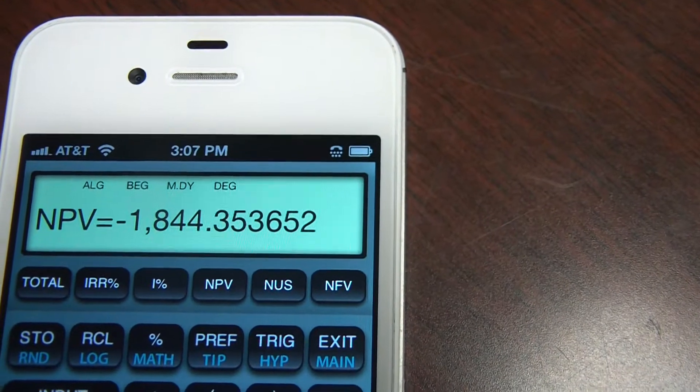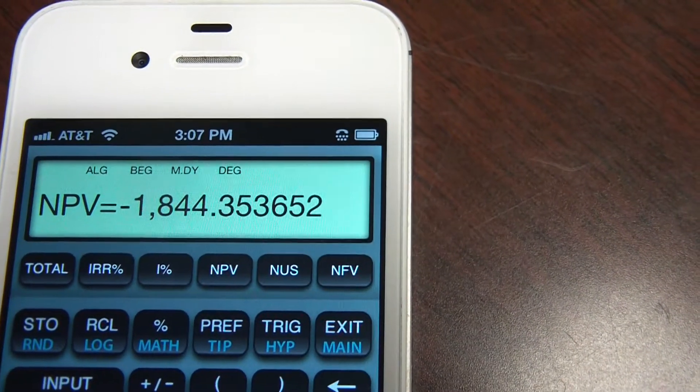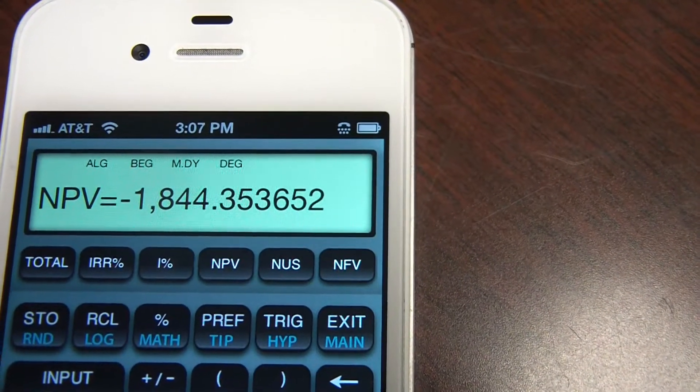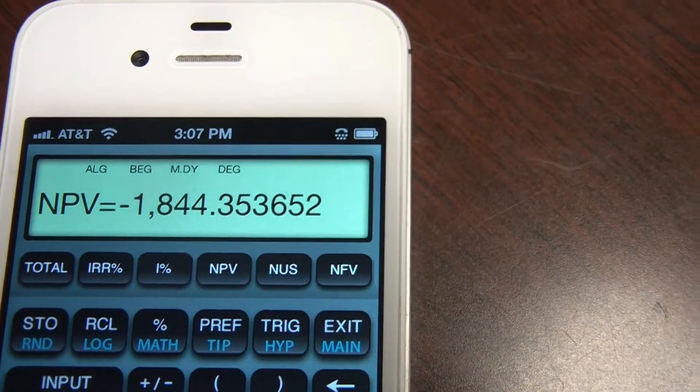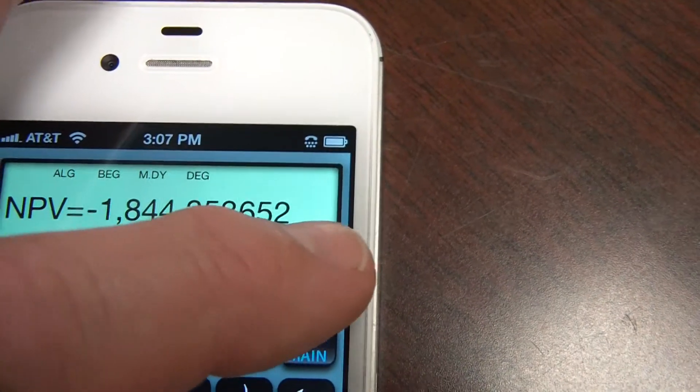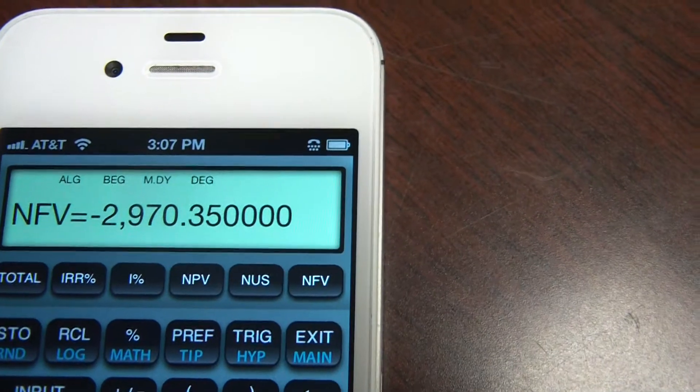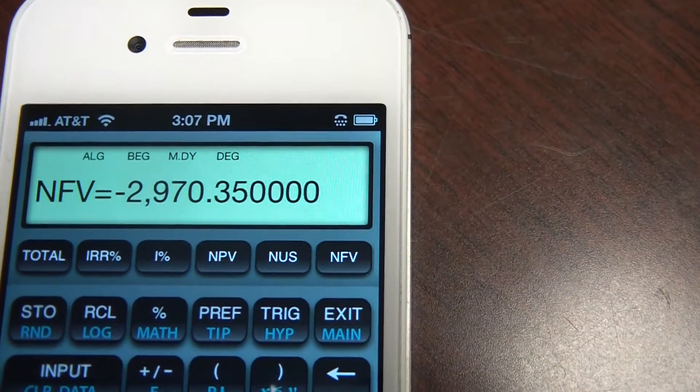The net present value of this value is negative. That's telling me the cost of capital of 10% is going to come out negative. And that future value, if we invest it there, is going to be also a negative value.